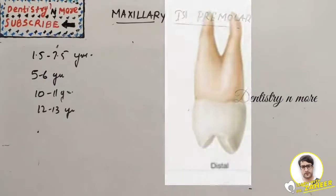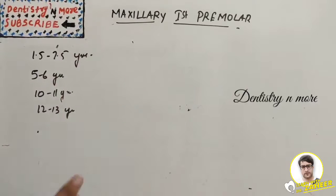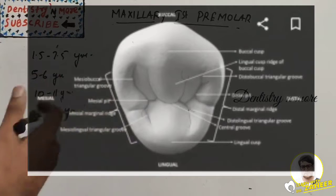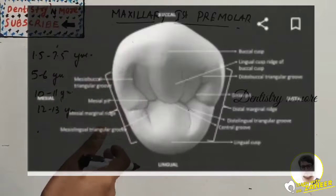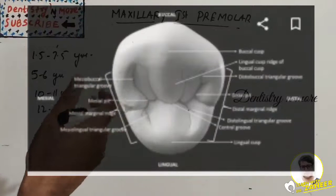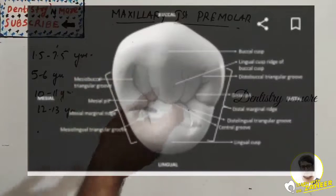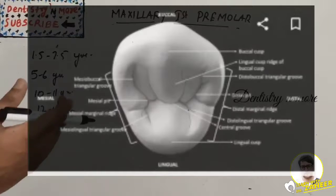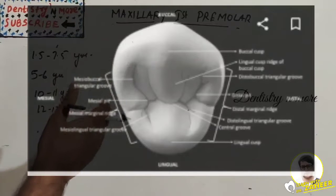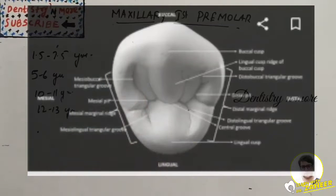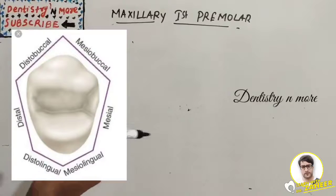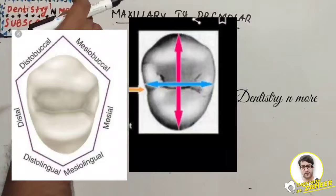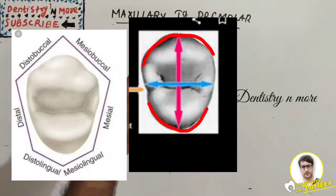On the occlusal aspect, within the cusp ridges and marginal ridges, the following are present: the tips of buccal and lingual cusps, buccal and lingual triangular ridges, distal buccal developmental groove, distal and mesial triangular fossae, and the central groove. The outline of the crown can be described as hexagonal or six-sided, and it is wider buccolingually than mesiodistally. Prominent buccal ridges contribute to a generally convex buccal outline, and the lingual margin is evenly convex, almost in a semicircle.